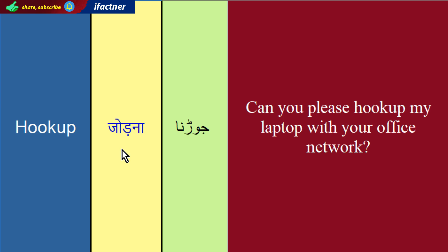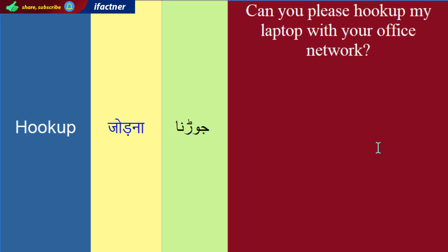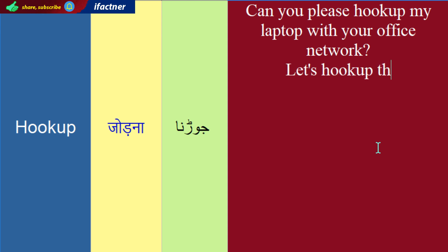Hookup ka kuch informal meanings bhi hai, jin mein seh aek hookup ka meaning yeh hai, ki jis tarhaan aap aapne dhoston ke saath jake milen, ya phir aap aur aapka eek dhost plan banayin ke hum ne is jagah pe jana hai, aur wahan ja ke milna hai, toh us cheez ko bhi hookup kehenge. Yahaan pae, joe doosa meaning hai is hookup ka, us ko use kertay hoay hum eek sentence binaate hai. Mein kehta hoon ki, lets hook up tomorrow.